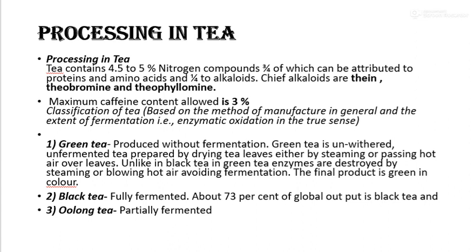There are different types of tea. First is green tea, then black tea and oolong tea. Green tea is produced without fermentation. Green tea is unwithered and unfermented, prepared by drying tea leaves either by steaming or passing hot air over the leaves.